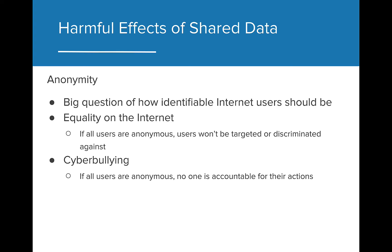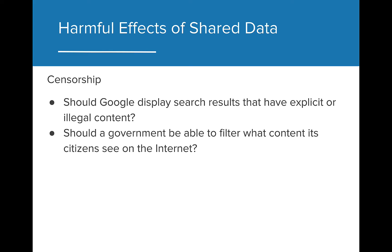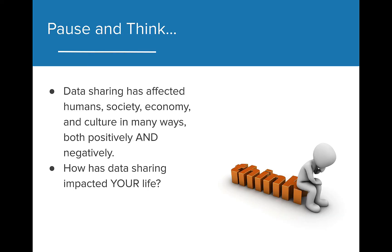We can tell who internet users are by the data they share. How identifiable should internet users be? On one hand, anonymity supports equality for all on the internet — if all users are anonymous, users won't be targeted or discriminated against for their gender or race, because that information won't be available. However, having complete anonymity provides opportunities for cyberbullying, and if all users are anonymous, no one is accountable for their actions. Censorship is also an issue that comes along with data sharing. For example, should Google display search results that have explicit or illegal content? Or should a government be able to filter what content its citizens see on the internet? Ideally we want the internet to be an open place where all information is available, but things get complicated because different governments have different laws, and certain internet services might be illegal in one country and not in another. All in all, data sharing has impacted many areas of our lives, both positively and negatively.